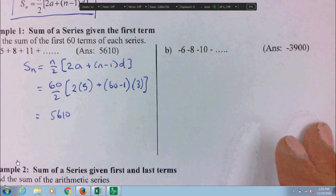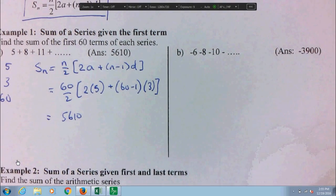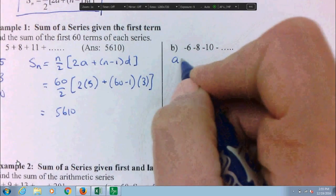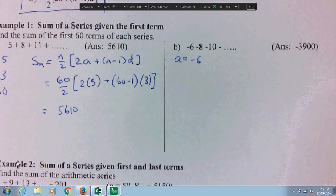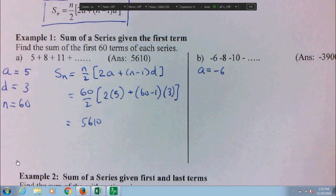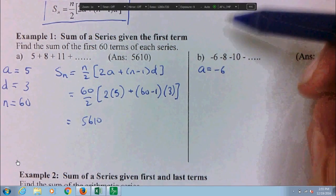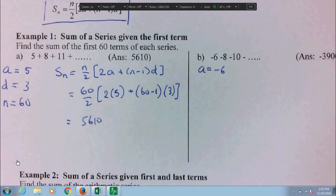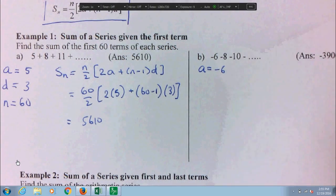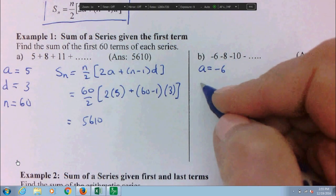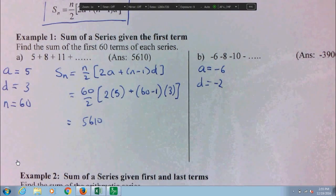Let's do b. Same thing. Is this arithmetic? It is. The a is negative 6. And what is the d? Well, remember these terms are not separated by commas anymore, but they're still separate terms. So this is negative 6, negative 8, negative 10. To get the d, you take any number and subtract the number before it. So negative 8 minus negative 6 is negative 2. And again, they want 60.